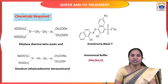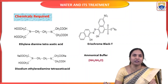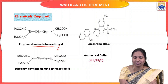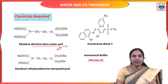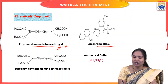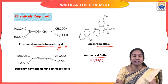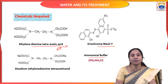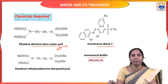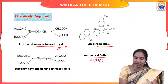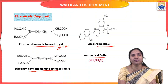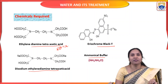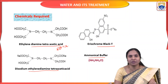The chemicals required for the determination of hardness by EDTA method are: first, EDTA (Ethylenediamine Tetraacetic Acid); second, Eriochrome Black T (EBT) used as an indicator; third, ammonical buffer (ammonium chloride and ammonium hydroxide) to maintain pH 8 to 10; and hard water sample.